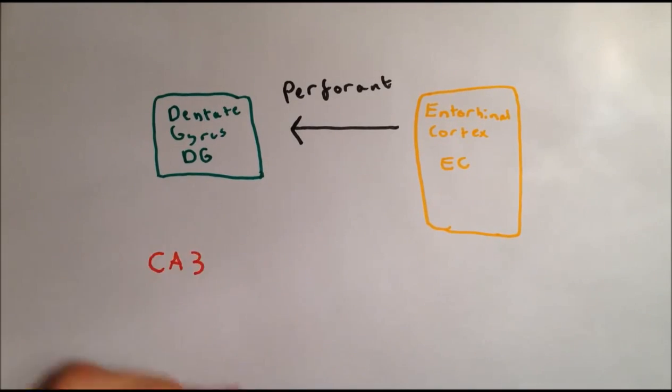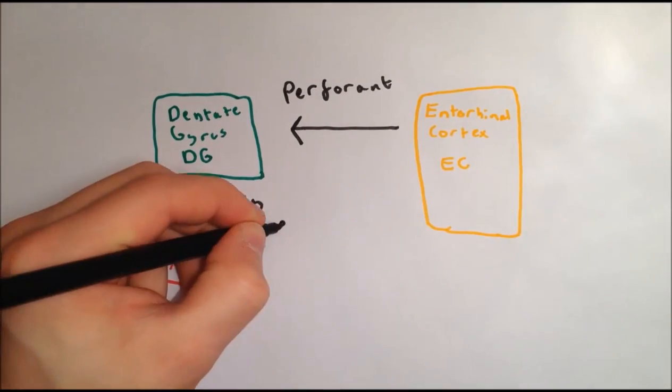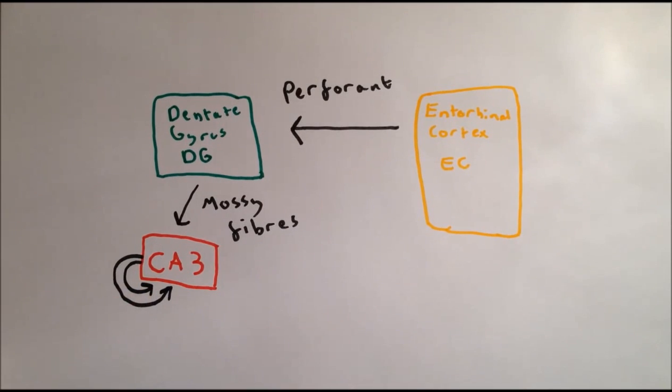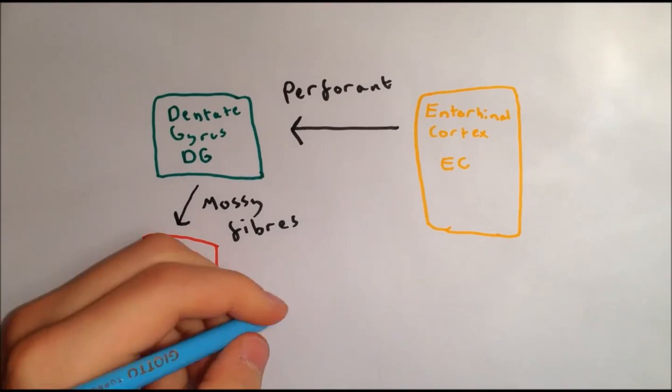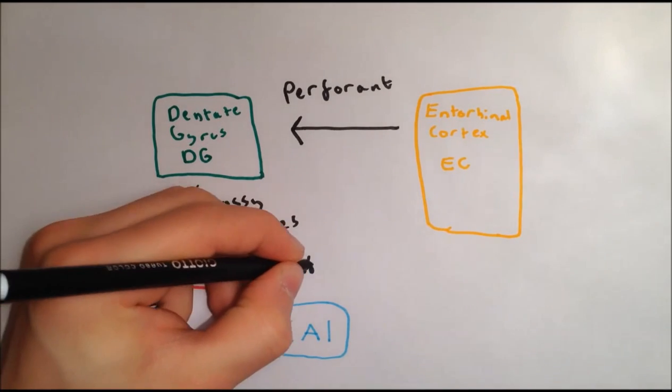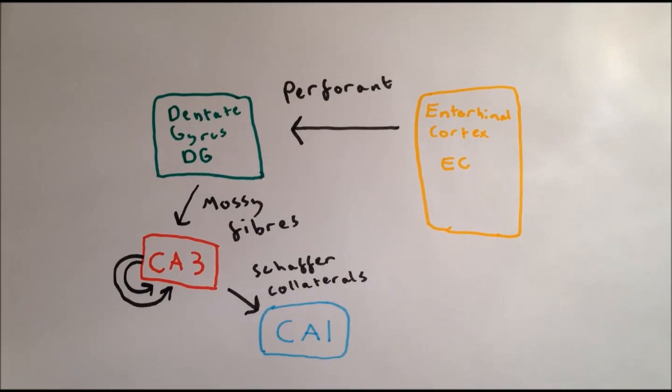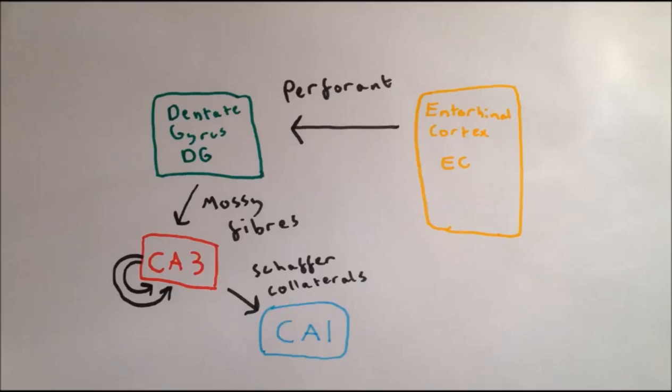The cells in the dentate gyrus then project their axons, known as mossy fibers, to the spiny dendrites of the cells in CA3. The cells in CA3 then send their axons, known as Schaffer collaterals, to the cells in CA1. There are also many recurrent connections within CA3.